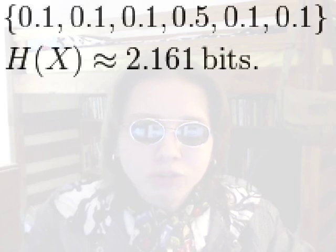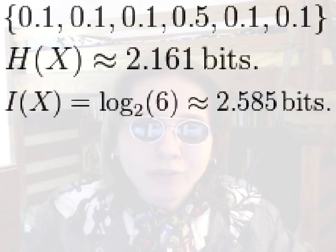the entropy is going to be about 2.161 bits, meaning, on average, you're going to get less information from an unbalanced die than you would from a fair die.